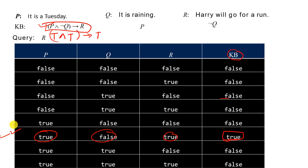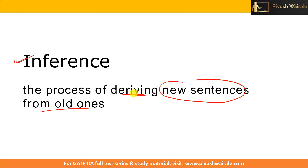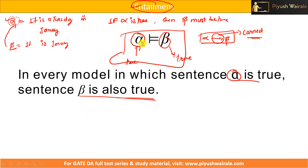I hope you understand how AI will determine whether a specific condition is true or not. Our query — will Harry go for a run? — the answer is yes, he will go for a run, but only when it is a Tuesday and it is not raining. Our AI will give us the answer that Harry will go for a run only if it is Tuesday and not raining. I hope you understand this example. Please remember what inference is, what entailment is, and what alpha entails beta means — this is a very important concept. One more lecture remains for propositional logic and then we are done. Thank you.